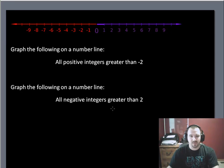It says graph the following on a number line. All negative integers greater than 2. How many negative numbers are greater than 2? Not many. I'd say 0.